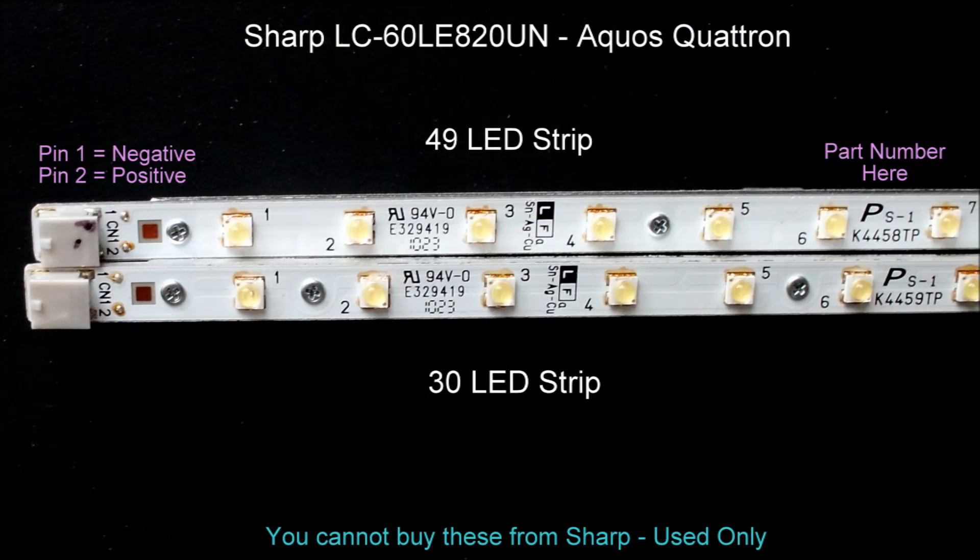Here's a diagram showing the different LED strips. One's a 49 LED strip on top, the other one's 30 LEDs on the bottom. Notice that pin 1 says negative and pin 2 says positive, and the part numbers are on the right so you can tell which one's which. You cannot buy these from Sharp. You're lucky if you can find any used ones. They're very difficult to find since most people end up just throwing the televisions away.